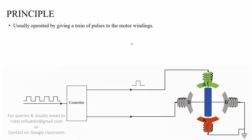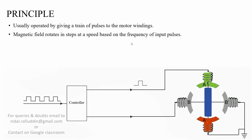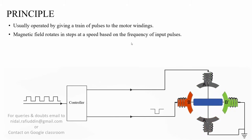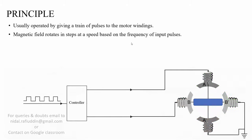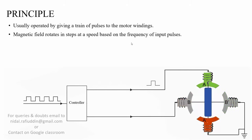Stepper motors are usually operated by giving a train of pulses to the motor windings, which causes the magnetic field to rotate in steps at a speed based on the frequency of input pulses. If the frequency of input pulses is large, the rotating field produced inside will have a large speed. The rotation of the magnetic field inside the stator depends upon the frequency at which the input pulses are given to the stator windings.